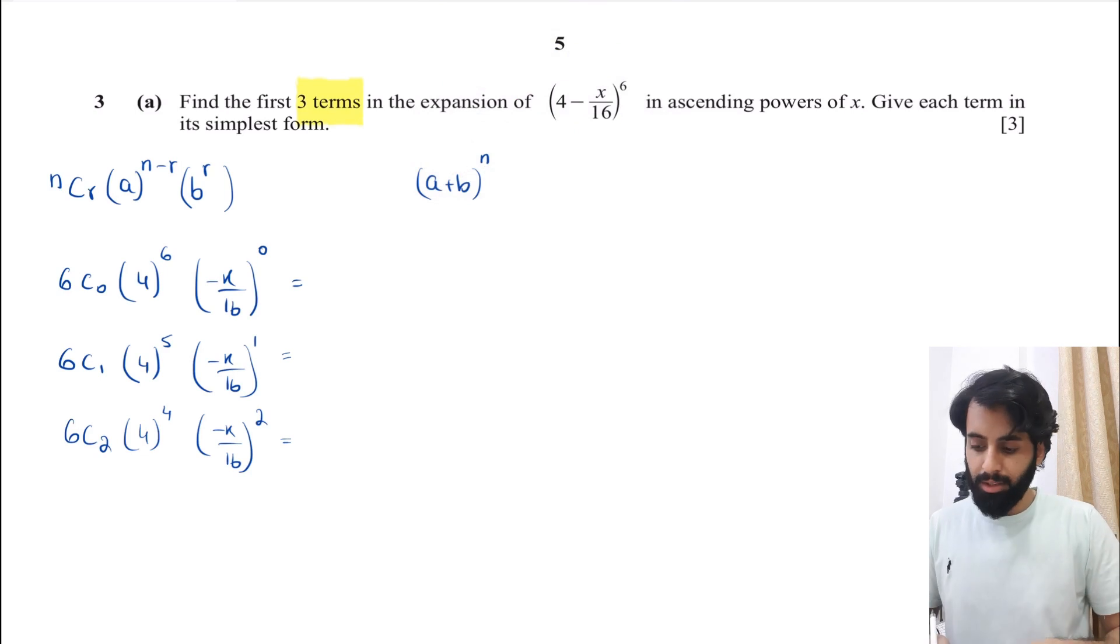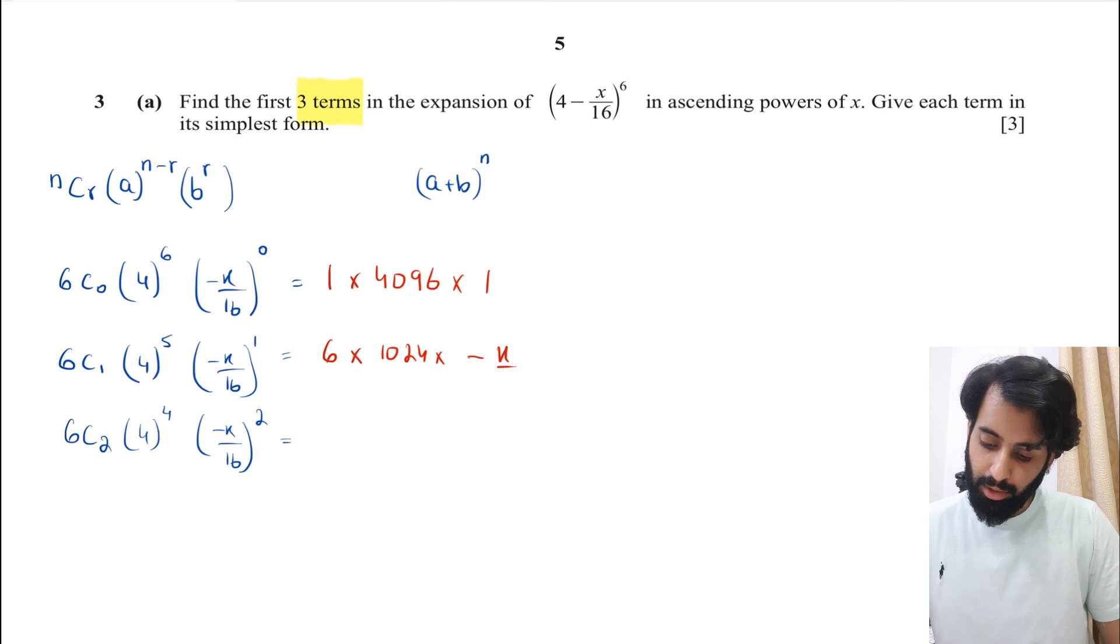Let's switch to another color. 6C0, if you know what 6C0 is, it's equal to 1. So this becomes 1 × 4^6. So 4^6 is 4096 × 1 again. Why? Because this entire expression when raised to the power of 0 will become 1.